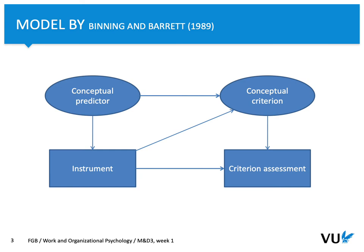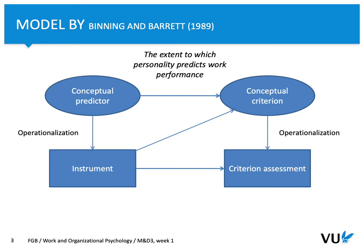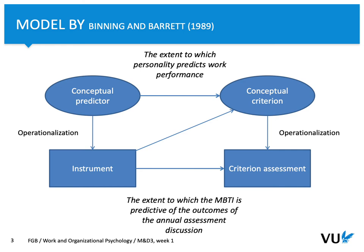For measuring criterion validity, we use a simple model that takes into account a conceptual predictor, an instrument, and a conceptual criterion — based on which we select criteria and assessment methods. Through operationalization, we identify how to operationalize each conceptual predictor and criterion. For example, to test criterion validity of a personality questionnaire, we can look at MBTI dimensions and a specific outcome like work performance evaluated during an annual assessment.